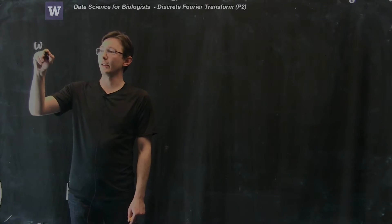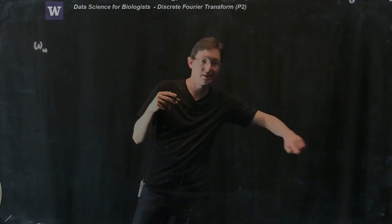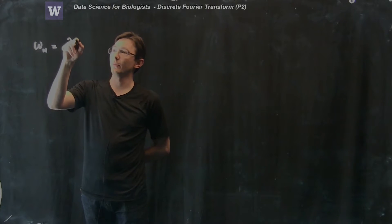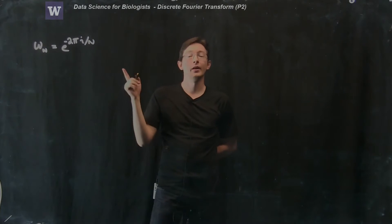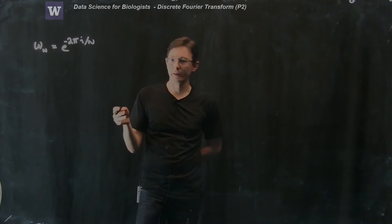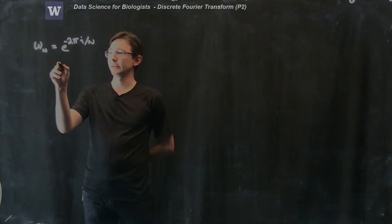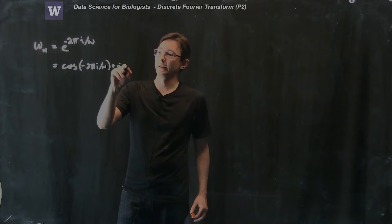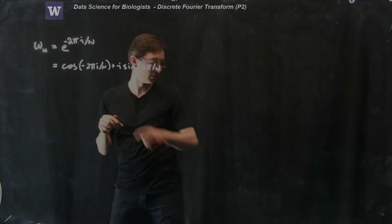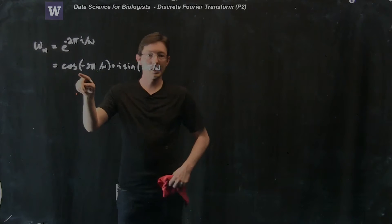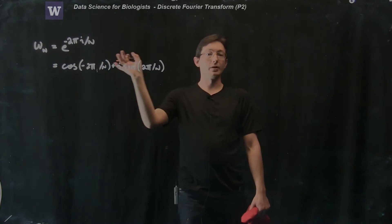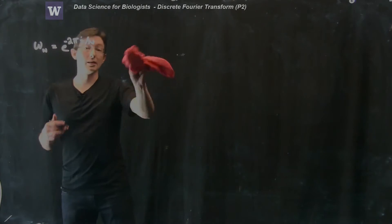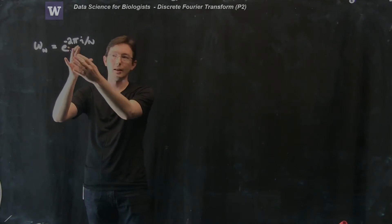I'm going to introduce a variable omega_n, the nth frequency. This is given by e to the minus 2 pi i over n. For those familiar with complex analysis, this can be written as cosine of 2 pi over n plus i times sine of 2 pi over n — a cosine part and a sine part. Here i is just the square root of negative 1, an imaginary number. So this is the nth frequency written as a complex number.